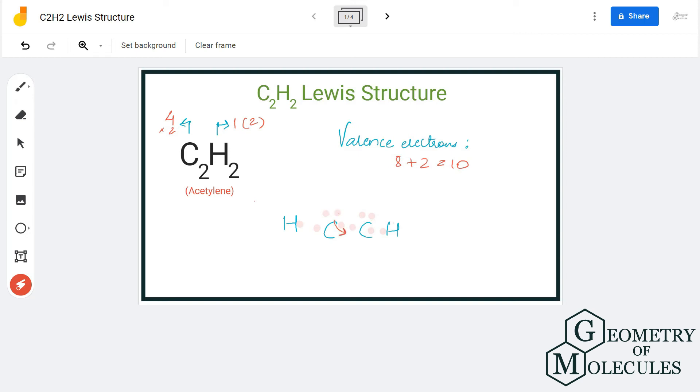Here carbon atoms will share six valence electrons, three for this carbon and three for this carbon, which will help them to complete their octet as it will have six here and two here. So they have eight valence electrons in their outer shells.